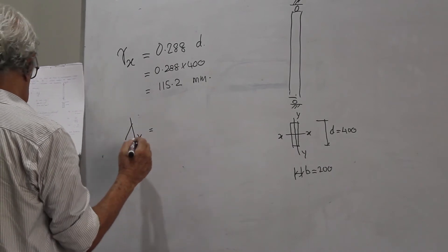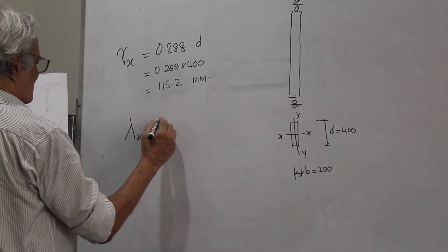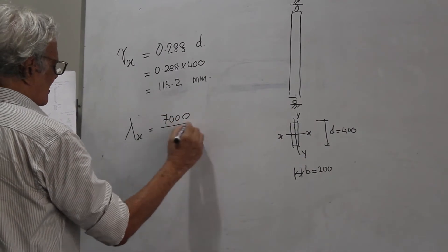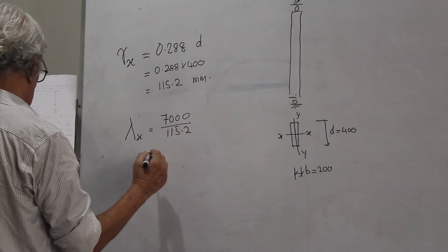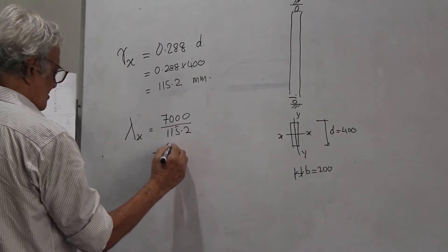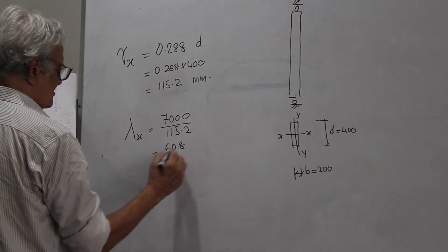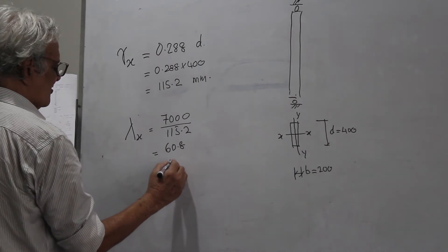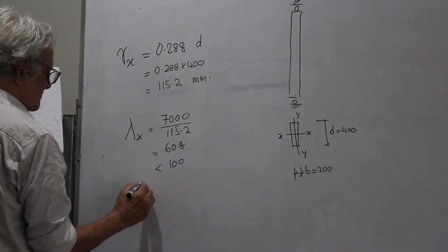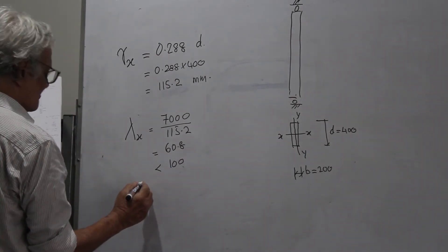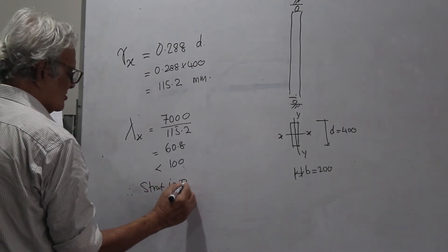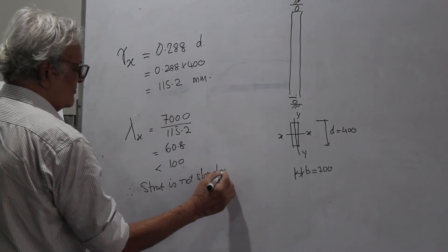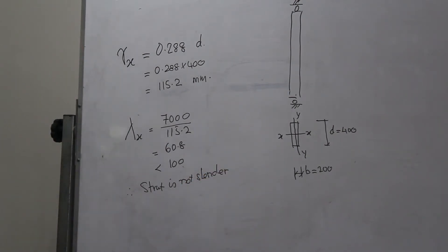Plus 7,415.2 equals 60.8 less than 100. Therefore the strut is not slender and will not fail by buckling about it.